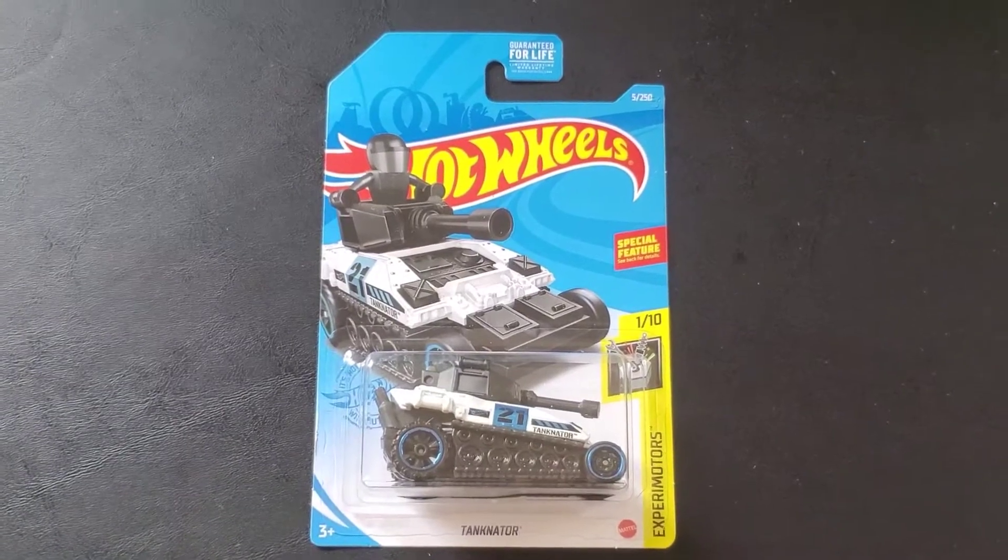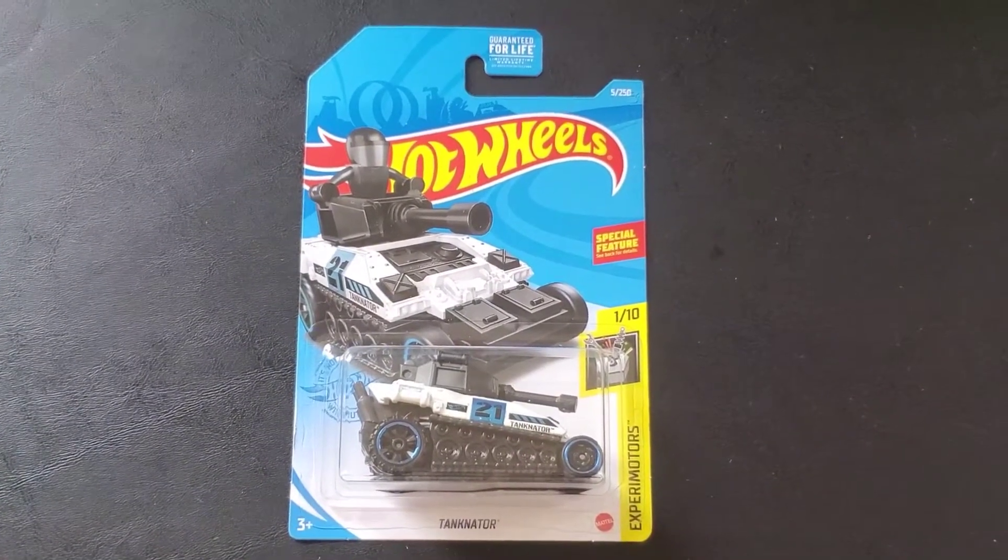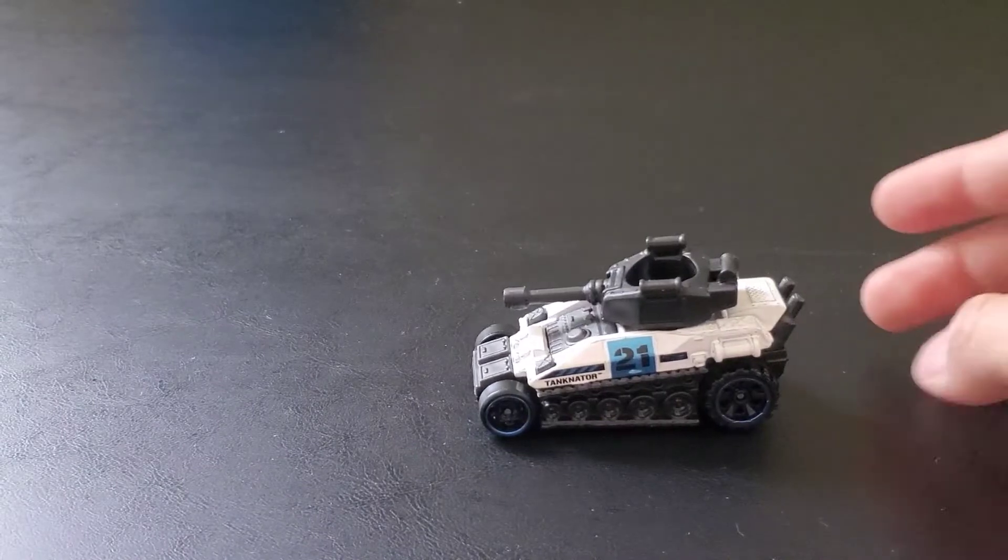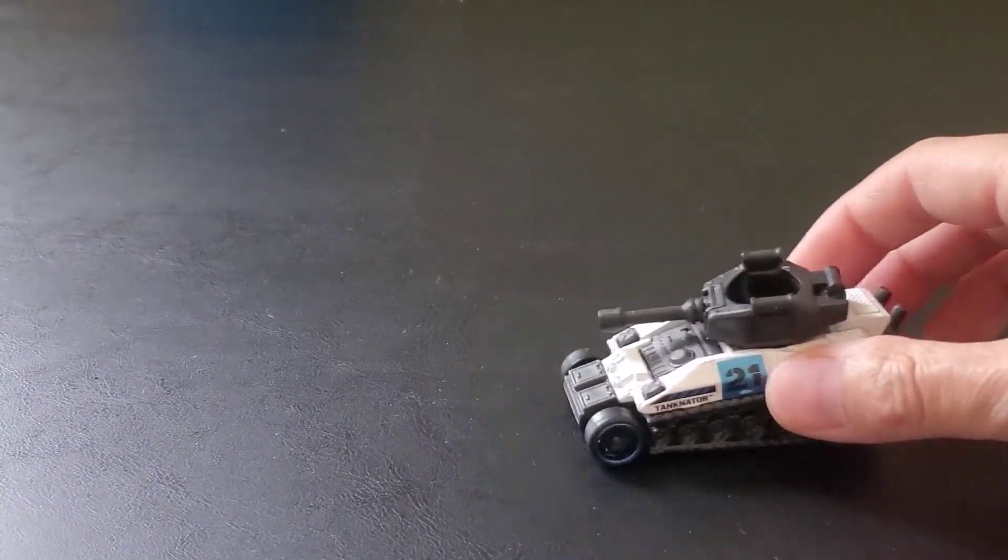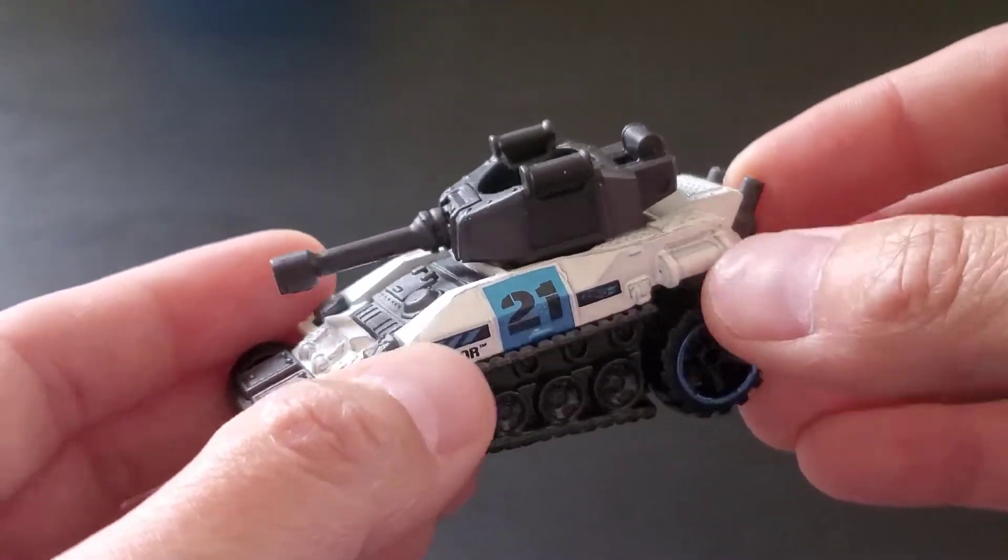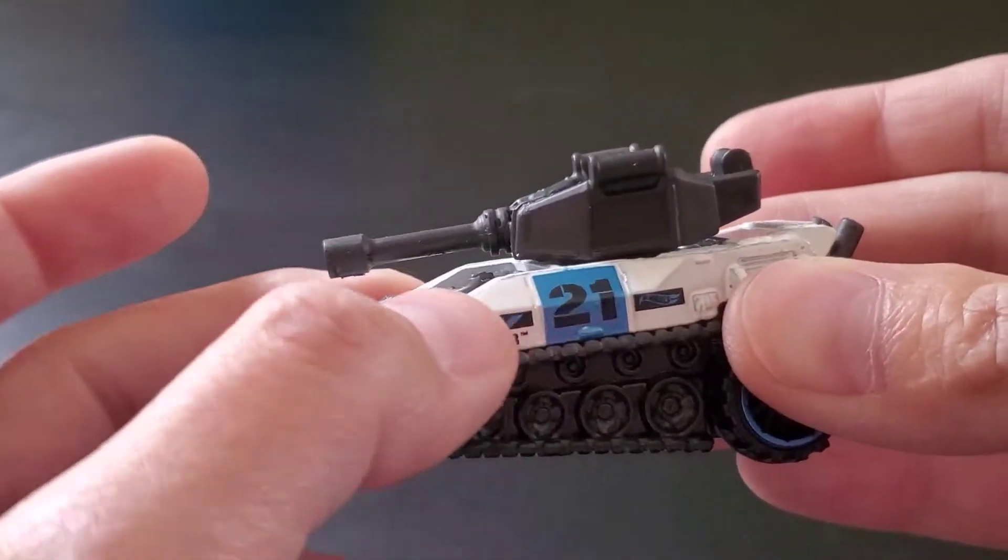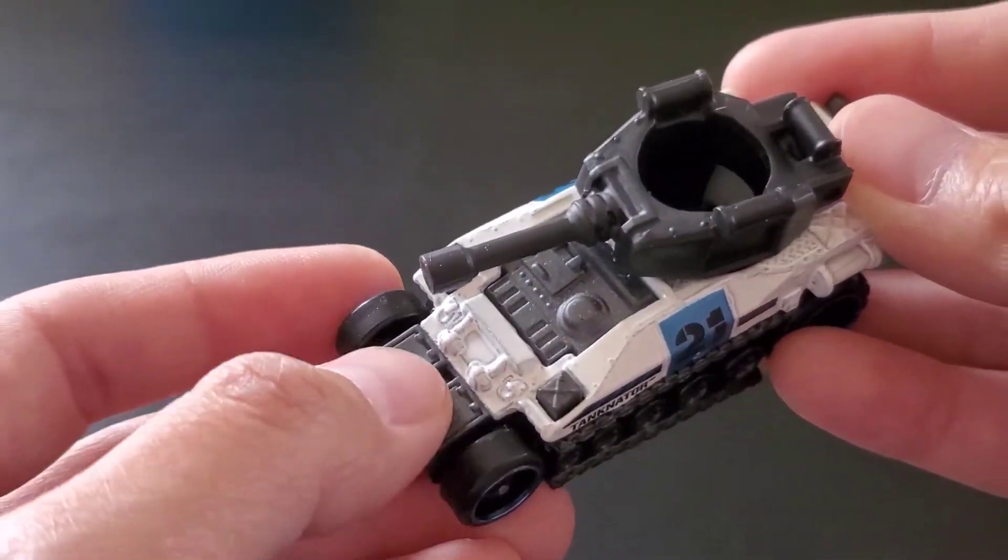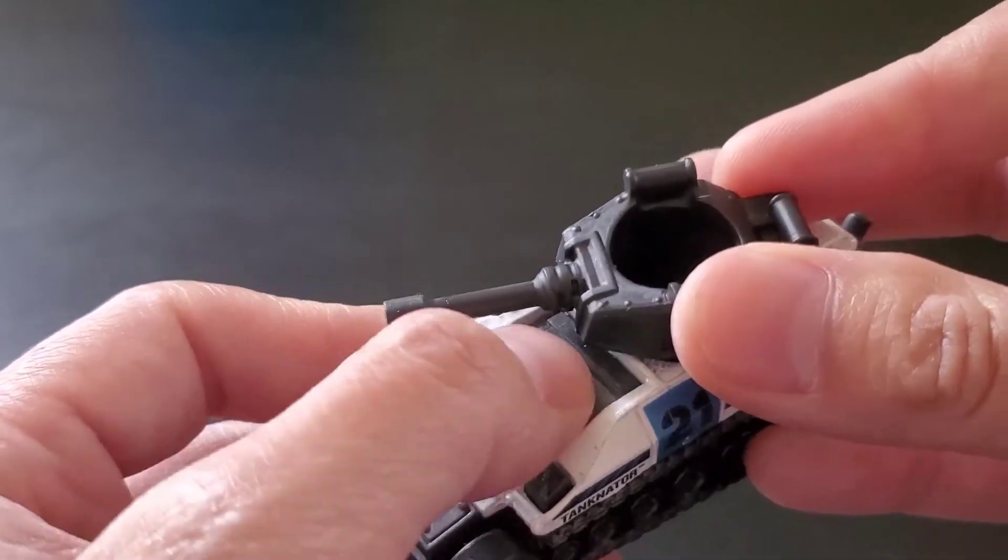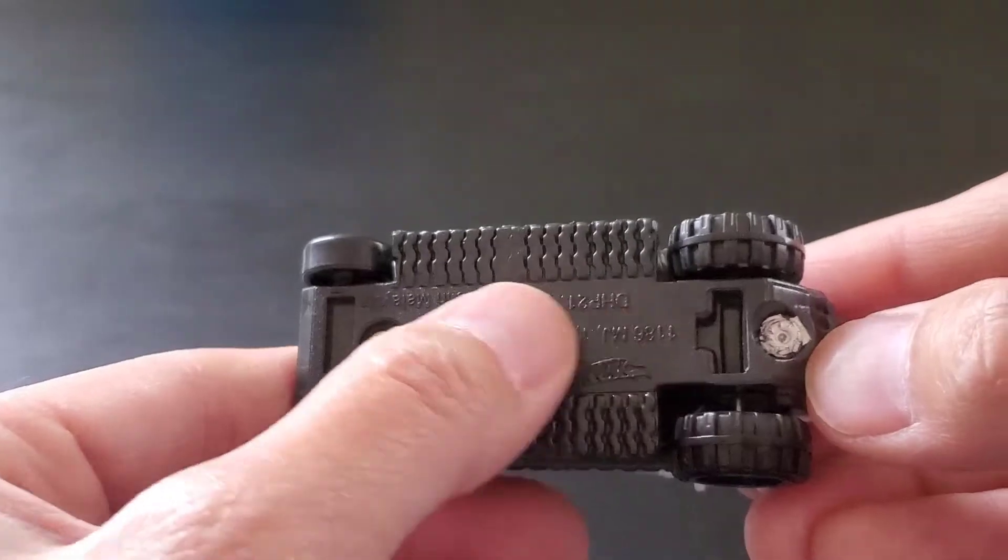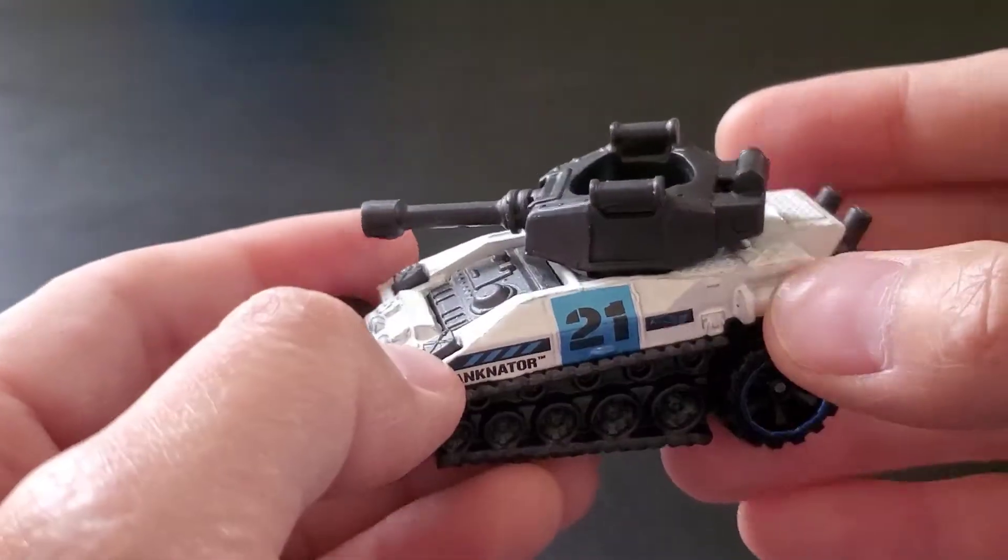So here it is out of the package. Rolls really nice. As you can see, this white part when feeling it is metal. These gray parts, even over here, are plastic. The bottom is plastic. So the only metal to this Hot Wheels is this white part that you see.